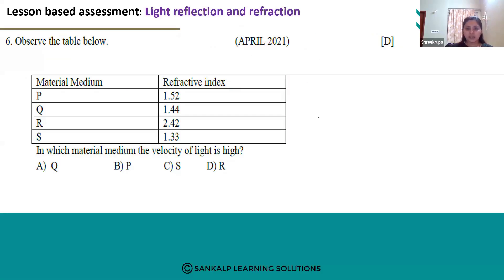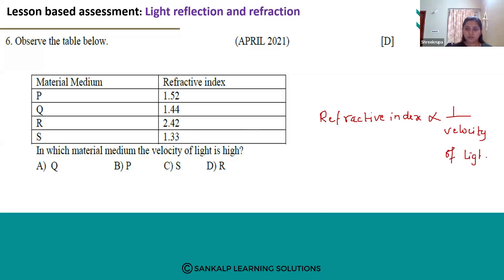Refractive index and the velocity of light are inversely proportional. So the material medium having the least refractive index will have the highest velocity of light.